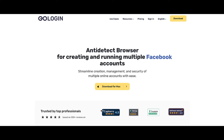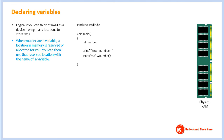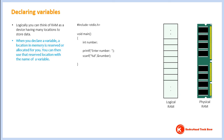Before we can discuss pointers, you need to clearly understand what happens when you declare variables. All open documents and data that are currently being used are in RAM, which stands for Random Access Memory. Logically, you can think of RAM as a device having many locations to store data. Each location has a location number, just like rooms in a hotel can have a room number. This location number is called an address.